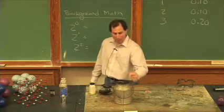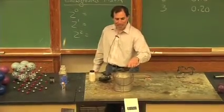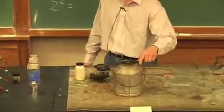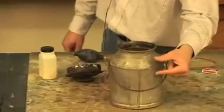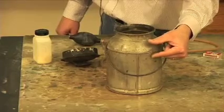This is an old one-gallon metal milk jug. And we fitted it and made this so that it would be an exploding apparatus. We have a candle, and it's been taped to the inside of the container right here.